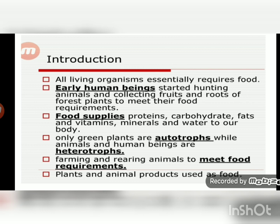All living organisms essentially require food. Early human beings started hunting animals and collecting fruits and roots of forest plants to meet their food requirement. Food supplies proteins, carbohydrates, fats, vitamins, minerals, and water to our body. Only green plants can prepare their own food, so they are called autotrophs, while animals and human beings depend upon either plants or other animals for their food and so are called heterotrophs.